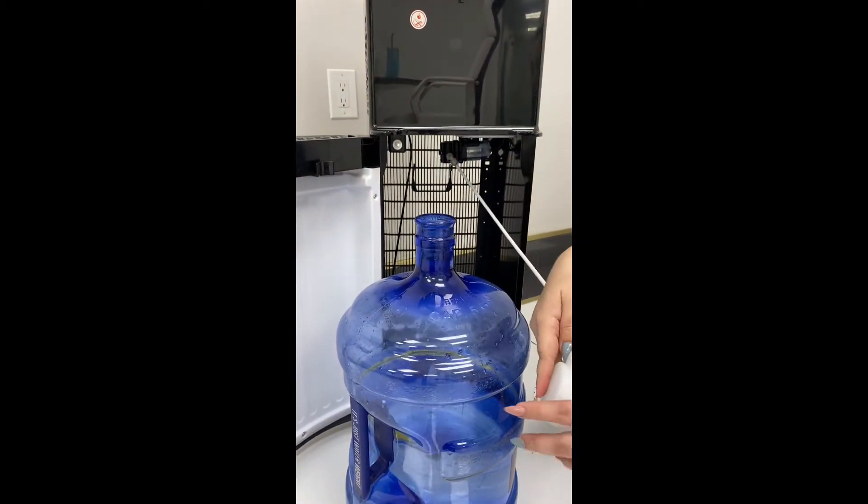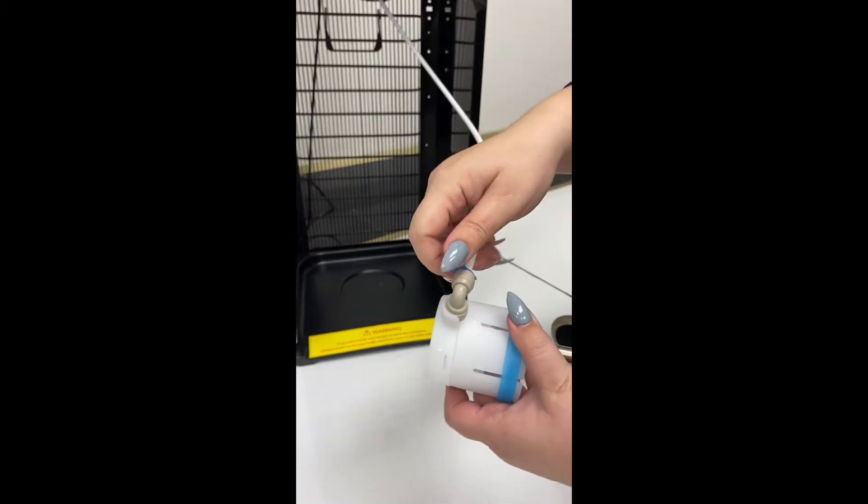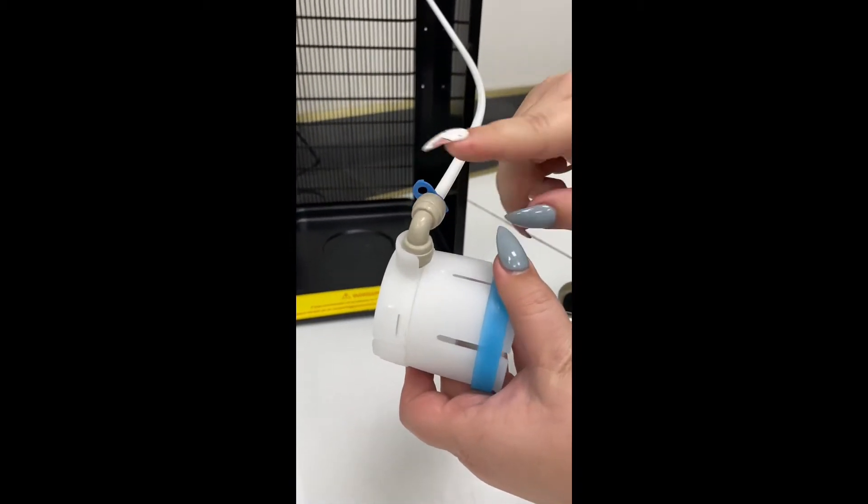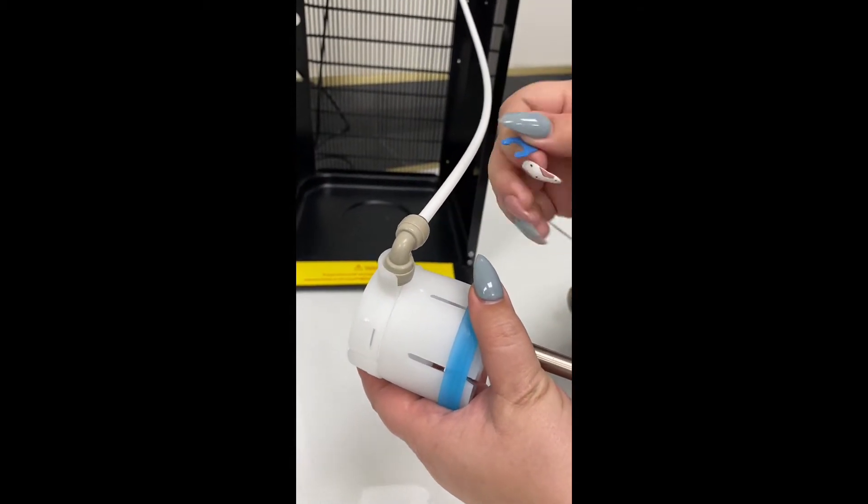Now, with the probe outside of the bottle, we're going to look at these connections here. If you have a blue clip on these connections, go ahead and take it off, because that will help to release this push connection elbow.